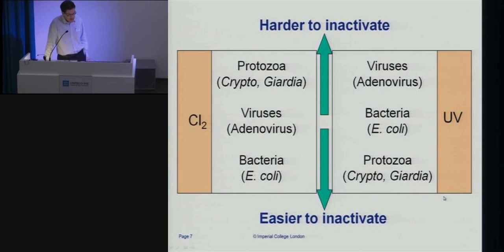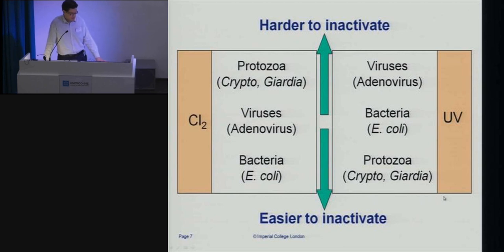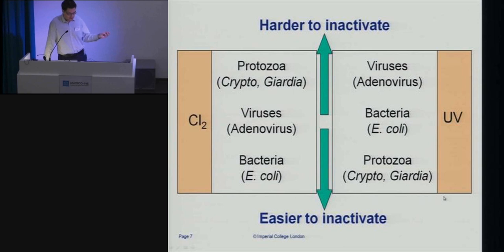If you had a multi-barrier disinfection strategy, as we tend to have in centralized drinking water treatment plants, both disinfectants will give you some inactivation of all groups of organisms. But it's important to recognize that neither disinfectant alone will give you complete coverage against every possible pathogen. You see a lot of studies in developing countries which look at just E. coli, which is frustrating, especially when talking about physical filtration technologies where viruses are much smaller than bacteria. If rotavirus or norovirus is causing illness in the community, E. coli is not really a reliable surrogate for treatment.